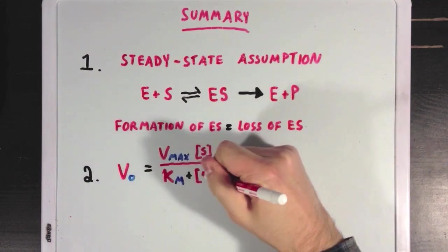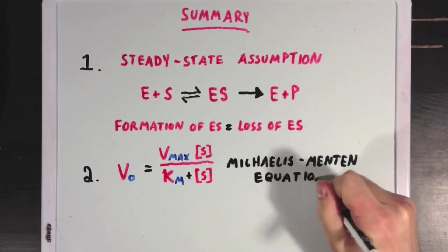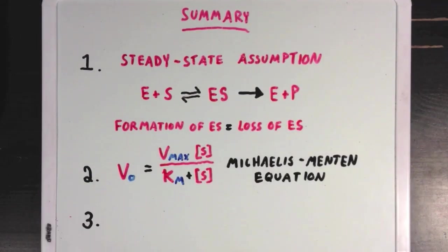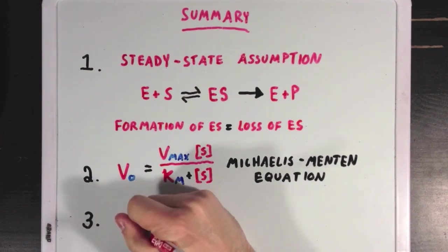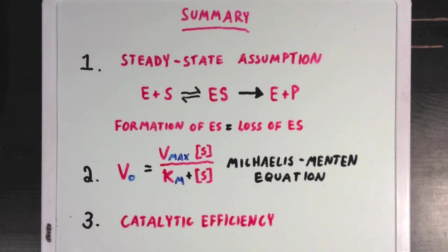Second, we derived the critically important Michaelis-Menten equation, which you should consider committing to memory. And third, we talked about how you can score how good an enzyme is at speeding up reactions by looking at that enzyme's catalytic efficiency, which is a combination of two new terms we learned about Kcat and Km.